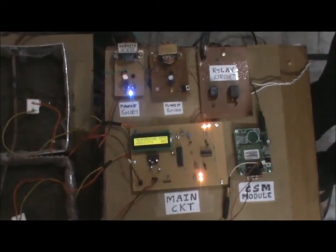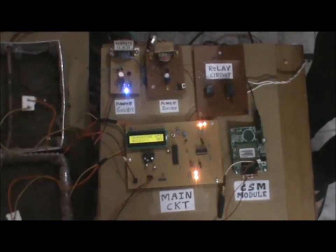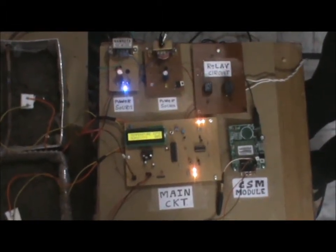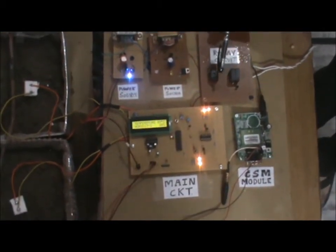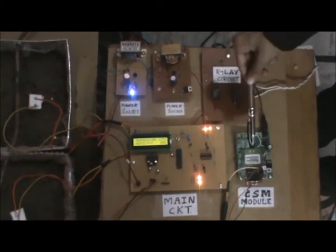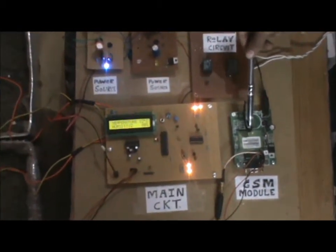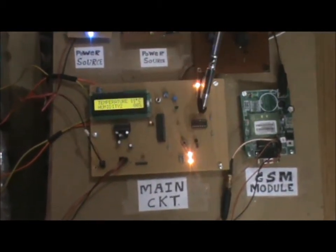So this is our project. As you can see we have used two power sources for our project. This is the relay circuit which consists of the two relays that controls the motor of the two farms. This is the GSM module that acts as an interface between the main circuit and the user.